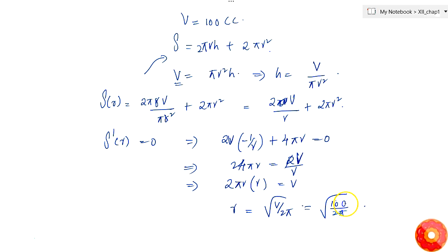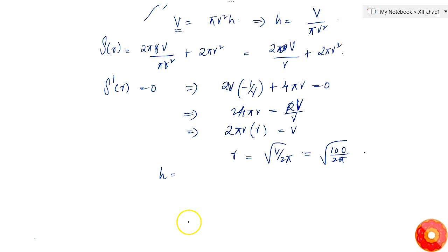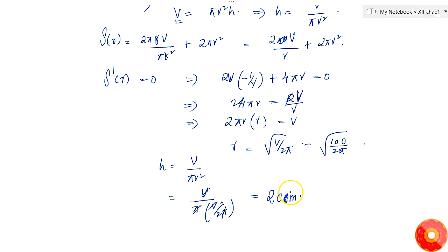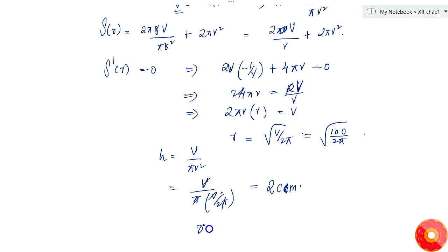The height is h = V/(πr²) = V/(π · V/(2π)) = 2. So the height of the can is 2 centimeters, and the radius is √(100/(2π)) = 10/√(2π).